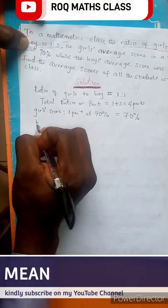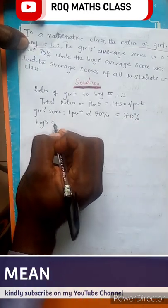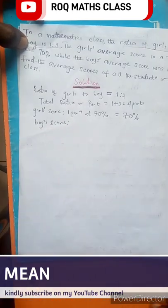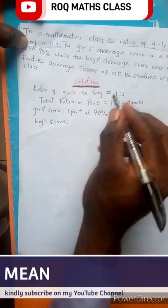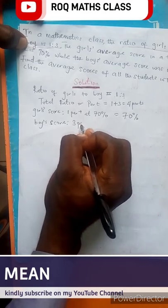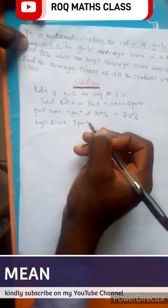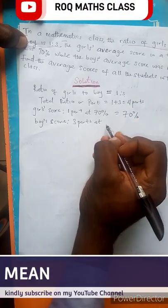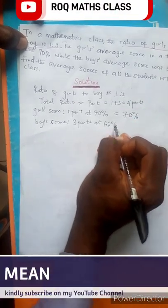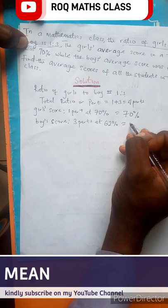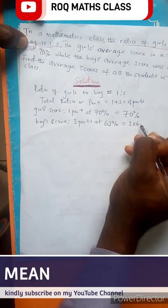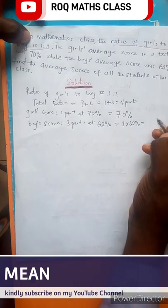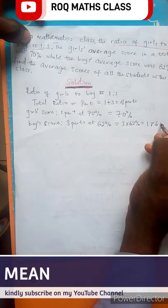Then for the boys' scores, how many parts do we have for the boys? We have 3. So which is 3 parts at 62%. So this is the same thing as 3 times 62%, which is the same thing as 186%.